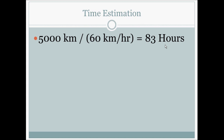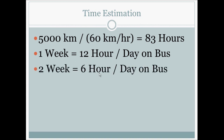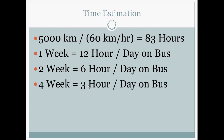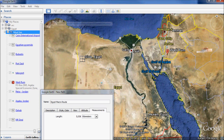So what does 83 hours mean in practice? If you have 1 week, you'll spend 12 hours per day on a bus. If you have 2 weeks, that's 6 hours per day — still quite a lot. If you have 4 weeks, you'll spend 3 hours per day on a bus. So by just knowing the distance, you can see that a trip like this really needs around 4 weeks or more. If you only have 3 weeks, you'll want to cut out part of the route. If you only have 2 weeks, cut more — perhaps just Aswan and Abu Simbel and back.